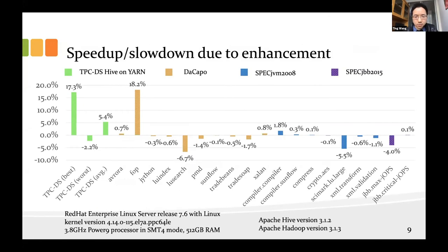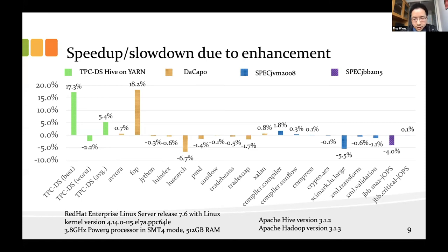With these three improvements, we tested our results. On one side, we tested with TPC-DS using Hive running on Hadoop. Since we found the infrequent contention scenario in Hadoop, we expected to observe some speedup. We tested 97 queries; two queries we could not execute for other reasons. The average speedup of the 97 queries is about 5%. The best case is about 17%. We also saw some cases with a slight slowdown of about 2%.